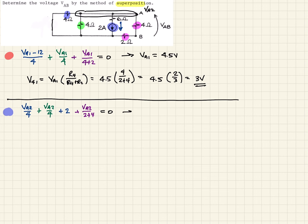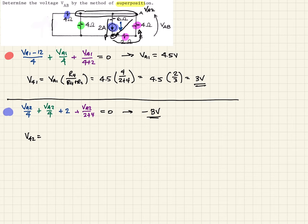Again, one equation, one unknown. Applying our algebraic principles, we get negative 3 volts. That's from A to B across all the resistors, not just our target resistor — which makes sense because the current source pushing down means current is pushed back up, opposite to our assumed direction. Now applying voltage division again: V4 from the second source is minus 3 times 4 over (4 plus 2), giving us minus 2 volts.